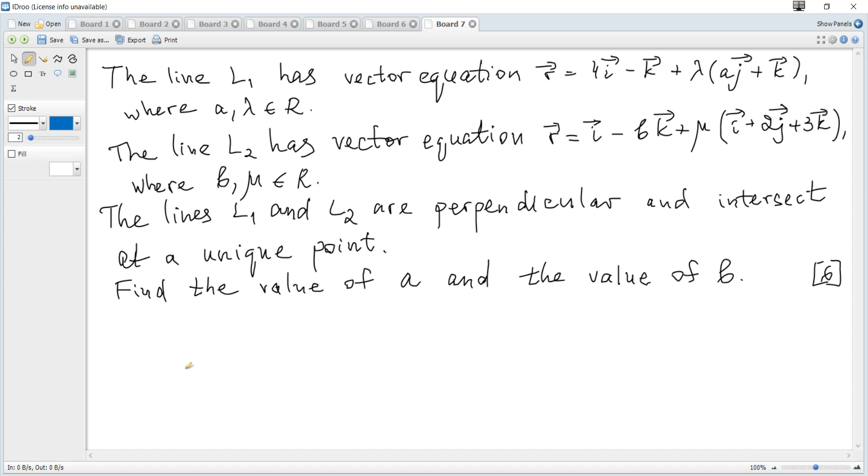The line L1 has vector equation given, the line L2 has vector equation given. The lines L1 and L2 are perpendicular and intersect at a unique point. Find the value of A and the value of B.